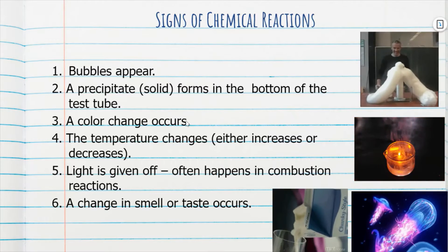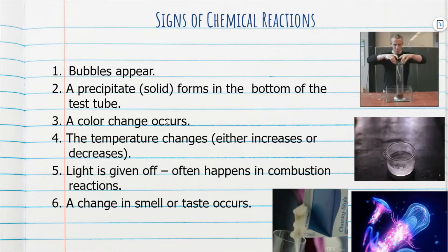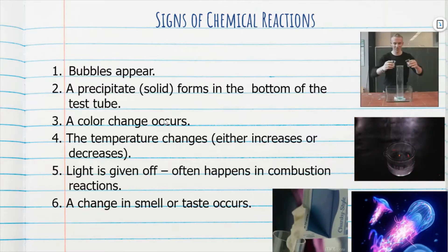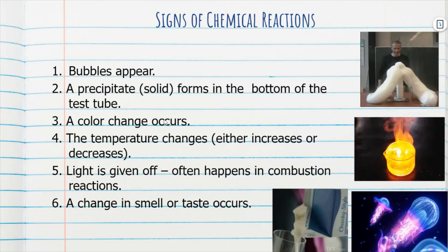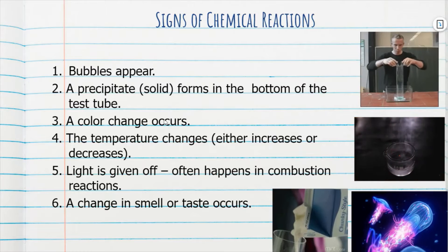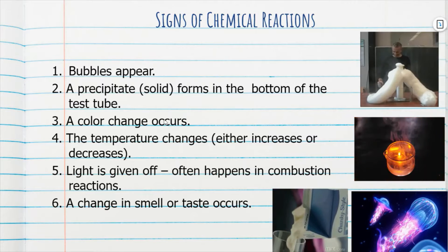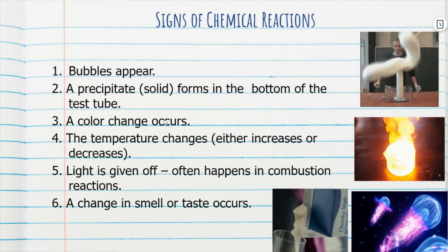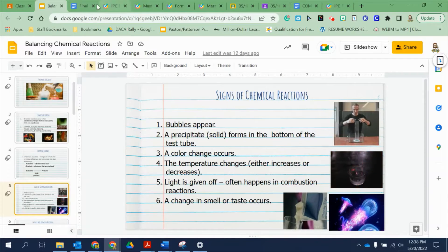A change in smell or taste is another sign. Something to be careful about with color change: food coloring dropped into water is not really a chemical reaction — that's more of a physical change. But when you add phenolphthalein, which is a base indicator, into the calcium solution and it turns bright pink, that is an example of a chemical color change. Food coloring in water is just like painting the water — that's a physical reaction.